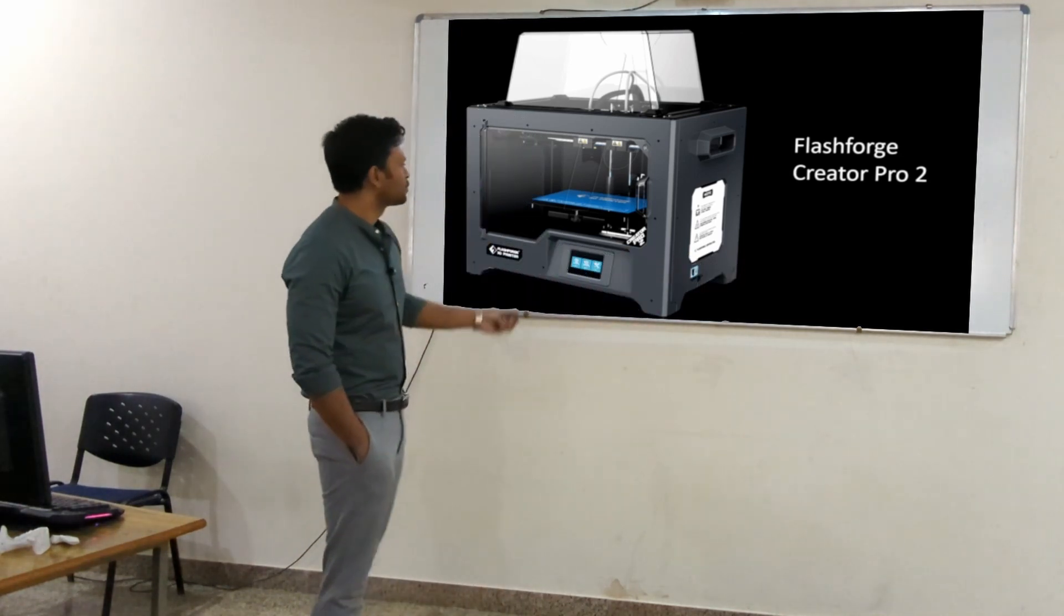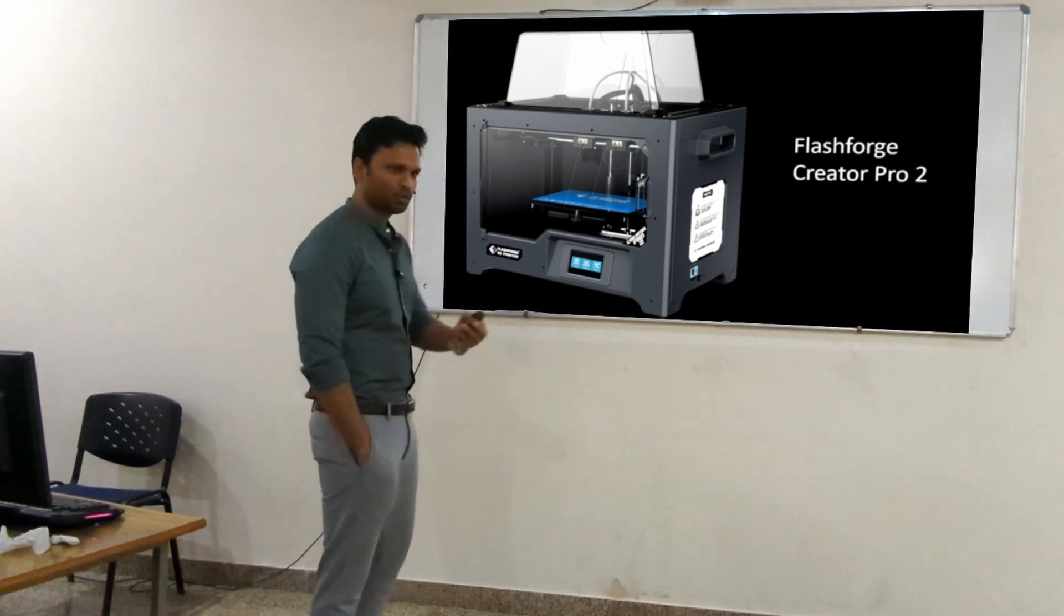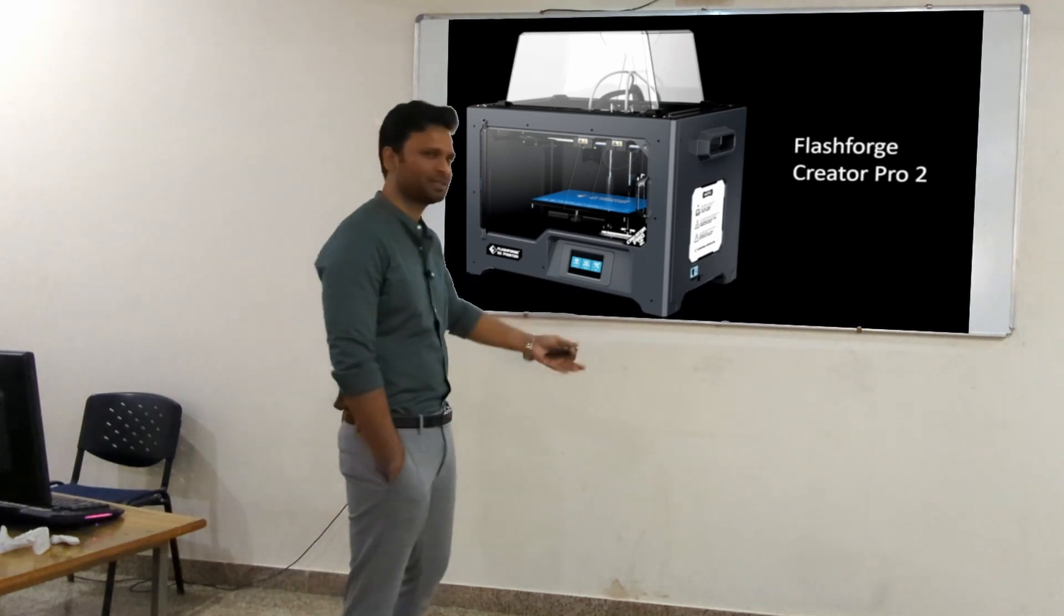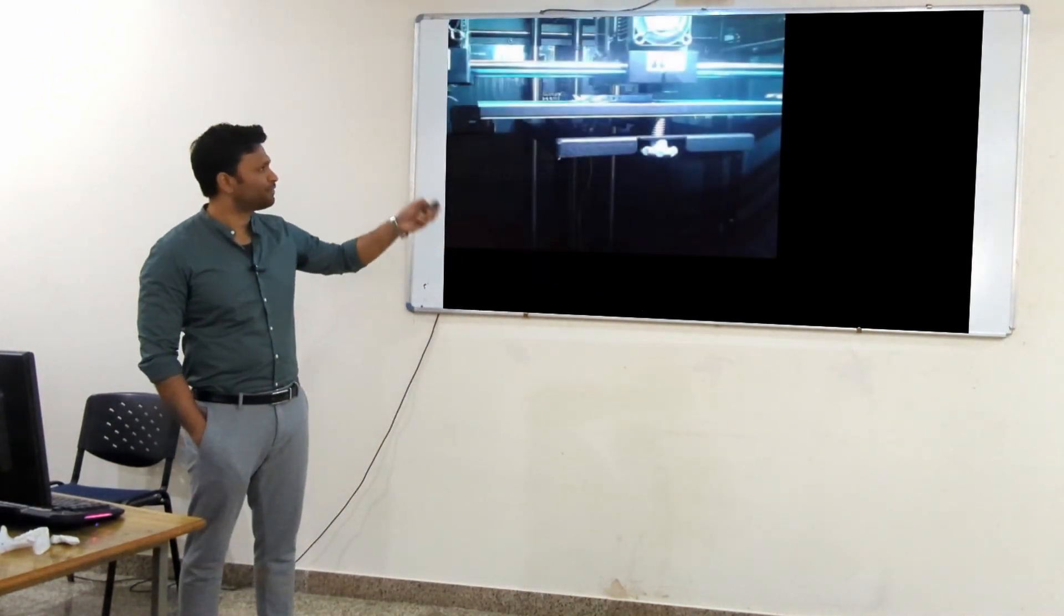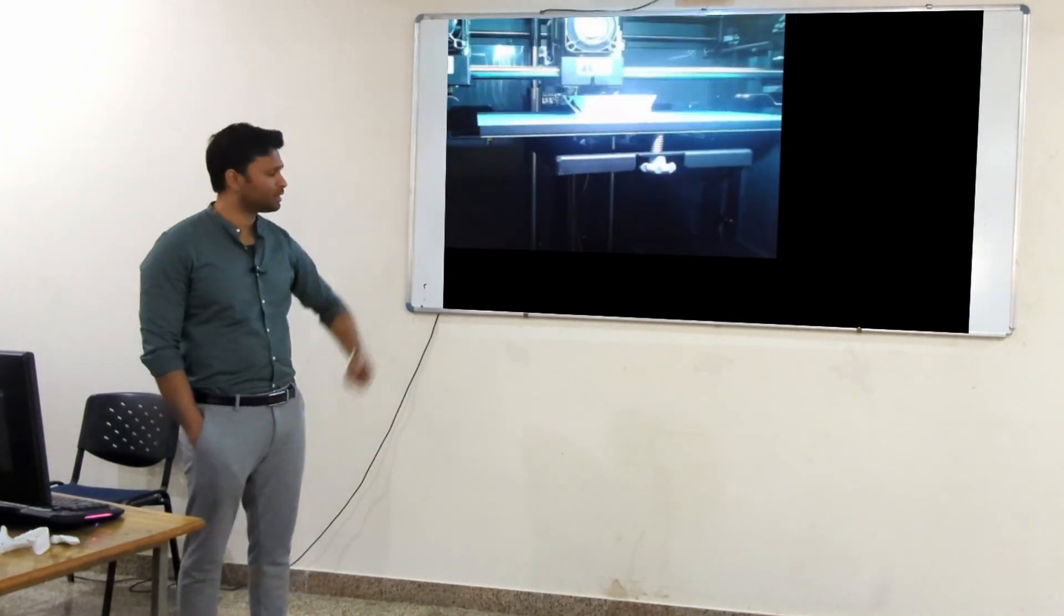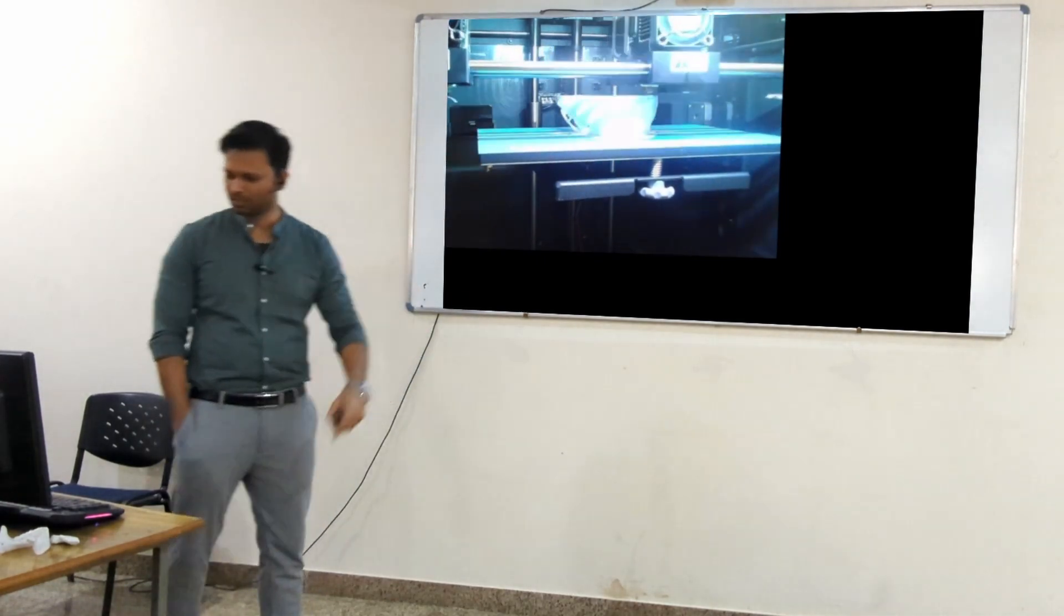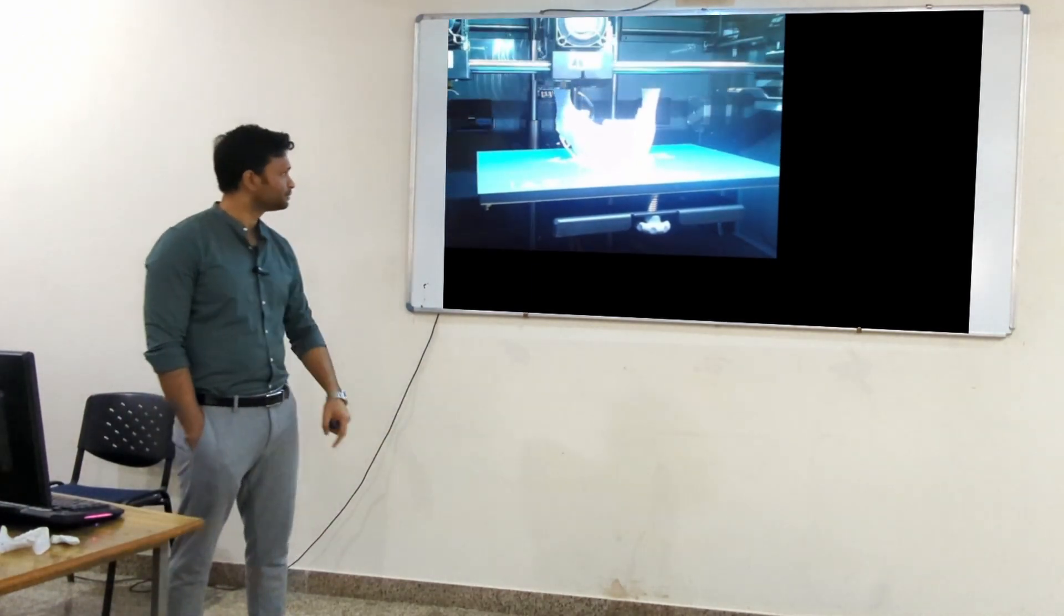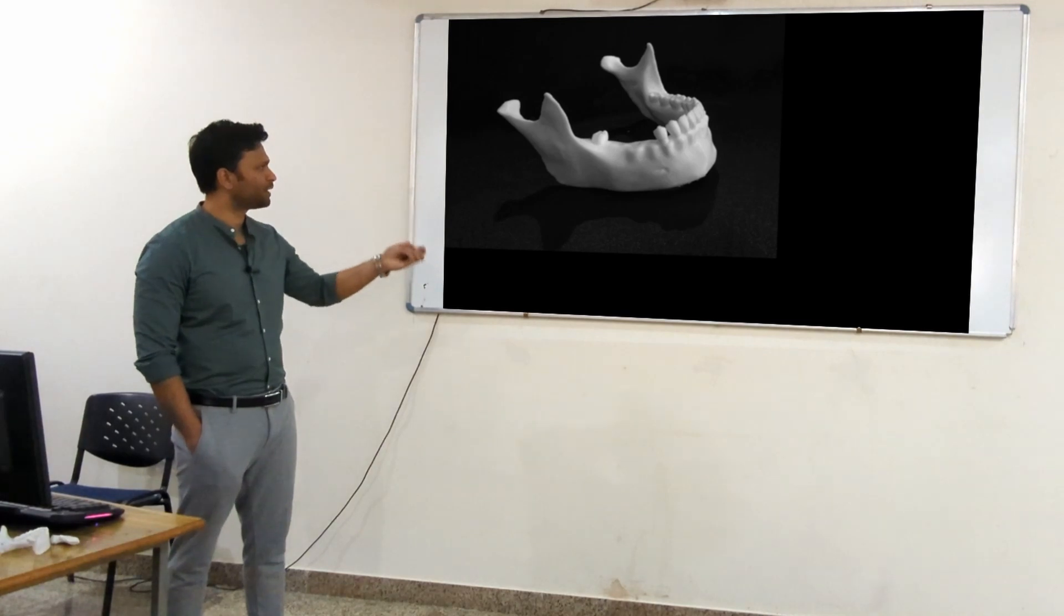That mandible took six hours to print. If we want to print two, it will take 12 hours, but we can print two together using two nozzles, so it's comparatively faster. This is the first mandible we printed. I took a four-hour time-lapse - the four hours are compressed into 15 seconds. You can see the print being deposited layer by layer. And the final print looked like this.